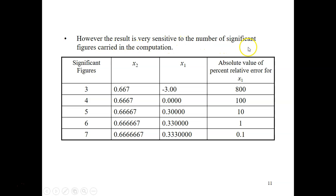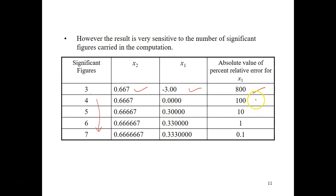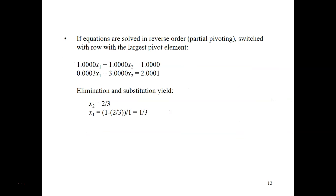We get x1 equals one-third and x2 equals two-thirds. However, the result is very sensitive to the number of significant figures carried. Using three significant figures, the relative error is very large at 800%. As we increase significant figures, the error decreases following a trend.